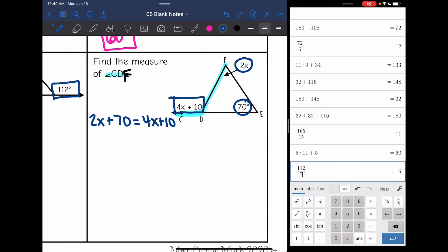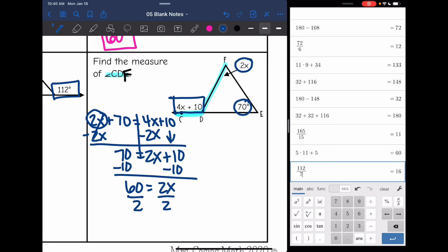So now I can move my variables to the same side. 2x is the smaller variable. So I'm going to subtract 2x from both sides. And I get 70 equals 4x minus 2x is 2x. And then we bring down the plus 10. And then I subtract 10 from both sides. And I get 60 equals 2x. Divide by 2. So x is 30.